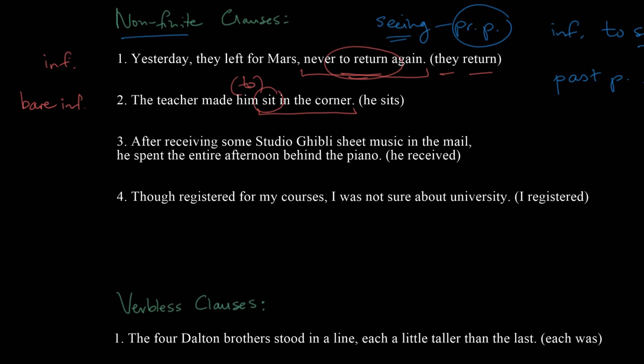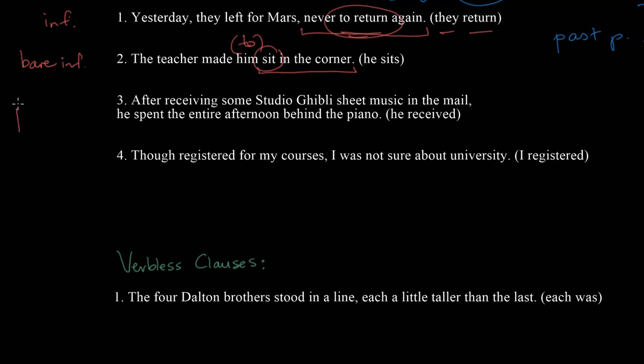Our third example here is a present participle. 'After receiving some Studio Ghibli sheet music in the mail,' and then we get our independent clause, 'he spent the entire afternoon behind the piano.' So looking at this opening clause then, you can see that it has a lot of features of the typical clause. 'After' is the word that connects this clause to what comes later. There's an object to receiving. Receiving what? Some Studio Ghibli sheet music. So the only thing that's really missing is a subject, who is receiving, and what's missing is a finite verb. But there's enough here to say, okay, we've got a present participle, a non-finite verb, let's just call it a non-finite clause, and it's close enough to a regular clause.